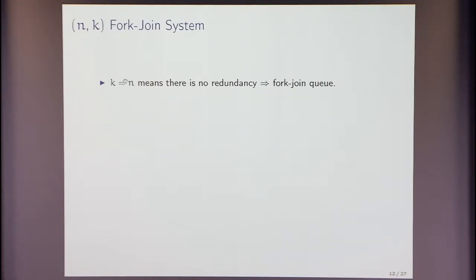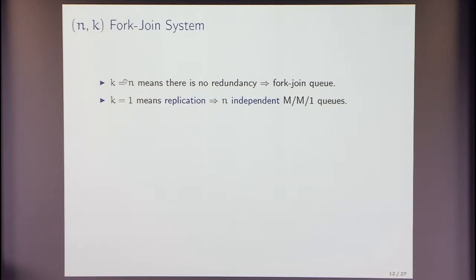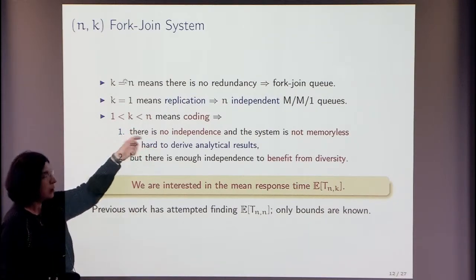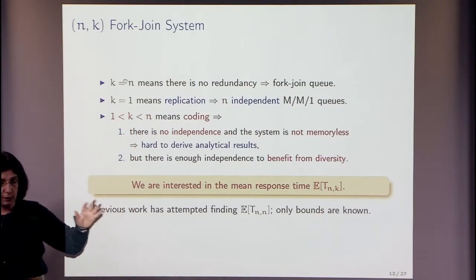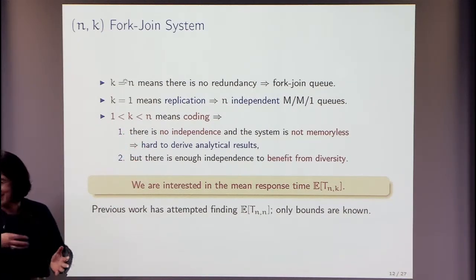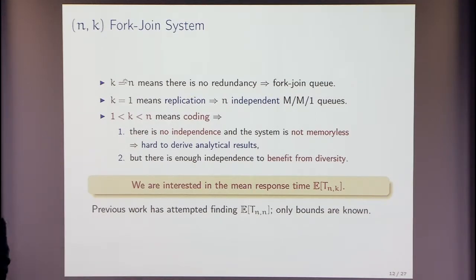To summarize the analysis framework: K=N means no redundancy — this is the fork-join queue. K=1 means replication, which can be viewed as N independent M/M/1 queues or a single M/M queue with service rate N*mu. Everything in between involves coding and introduces dependencies. Information and coding theorists call this replication versus redundancy — in other areas, redundancy is also just replication.